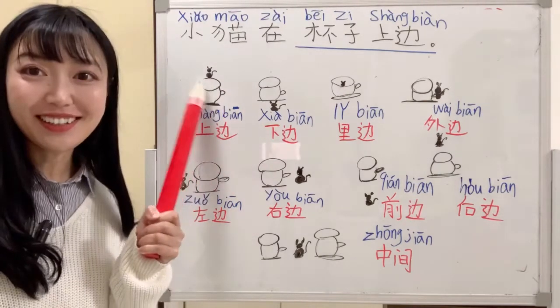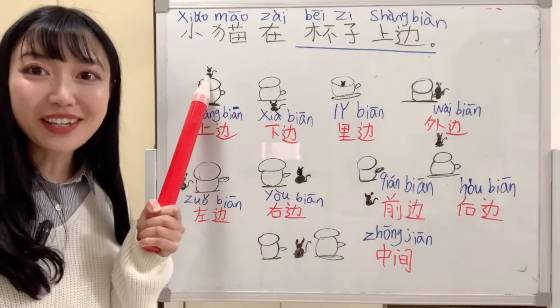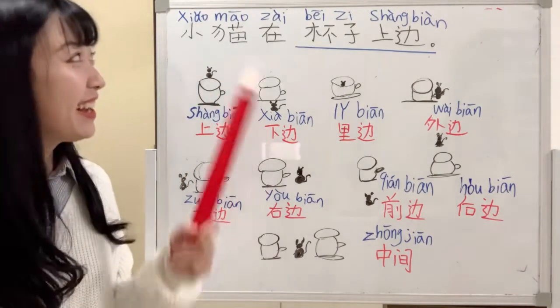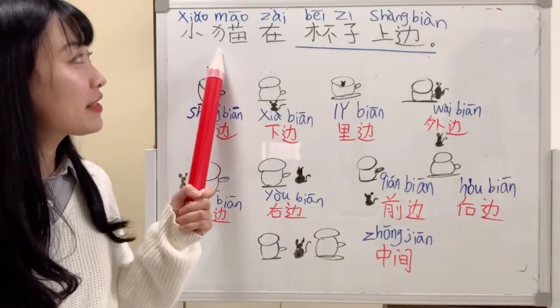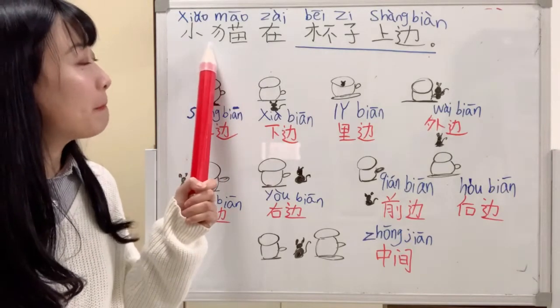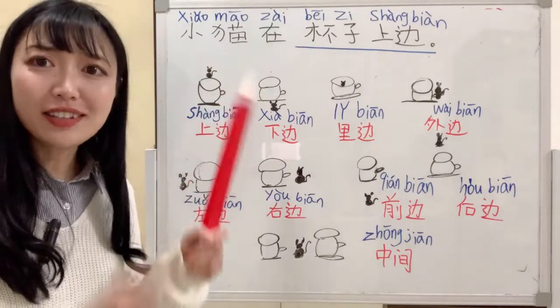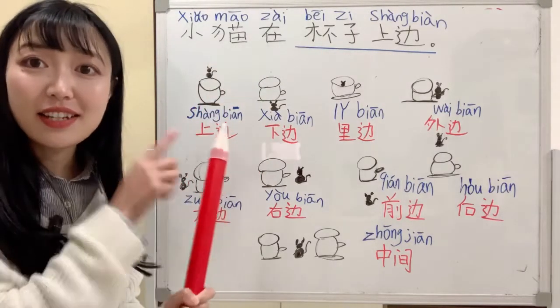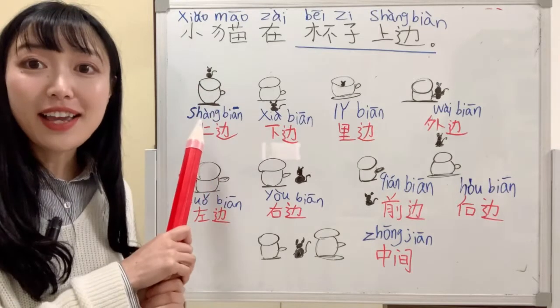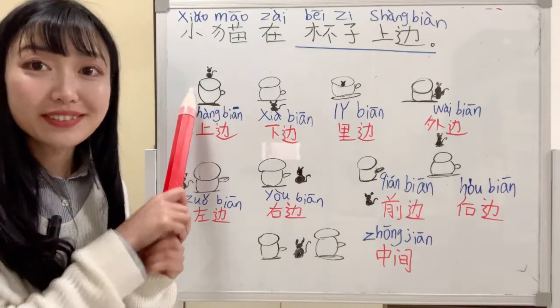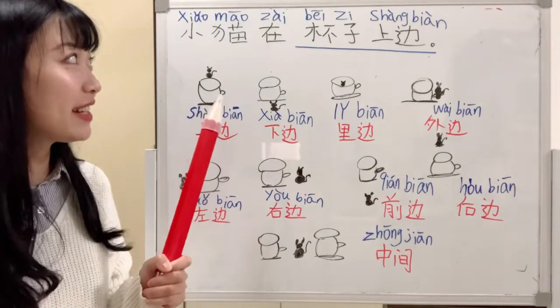Here, this is a small cat. So we want to say the cat is on the cup. How do we say that?